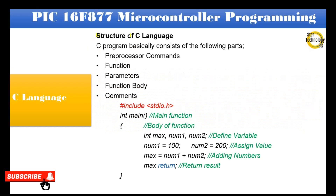The structure of a C language program basically consists of the following parts: pre-processor commands, function, parameters, function body, and comments.